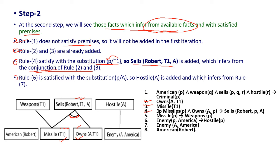Rule 6 satisfies with substitution of A in the place of P. So hostile(A) is added, which is inferred from rule 7. In rule 7, A is substituted in place of P to give hostile(A). This result is added from rule 6 and rule 7.